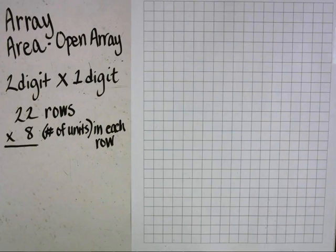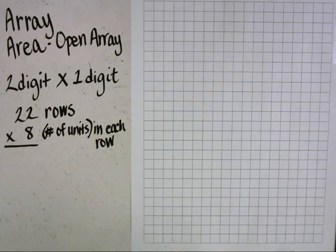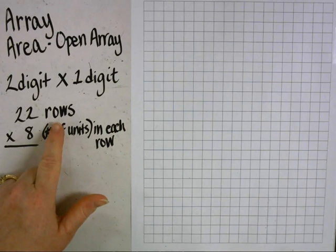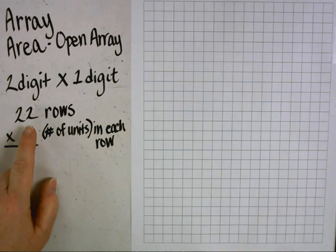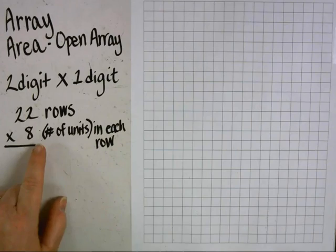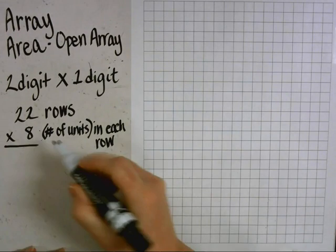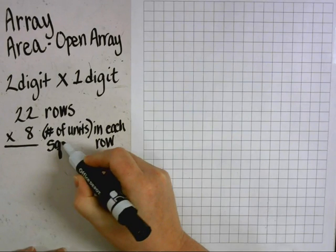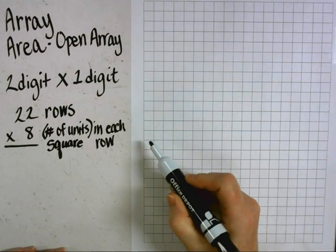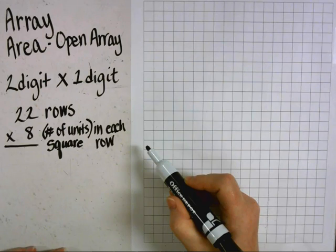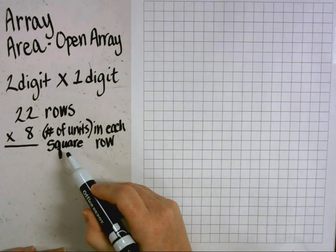In this session, I will use the numbers 22 and 8. In order to understand how big 22 times 8 is, I need to consider how many rows I will have in the array and the number of units in each row. In this problem, I will have 22 rows and 8 square units in each row. In some problems, you may have square inches, square yards, or square feet, but in this one we're going to be using square units.